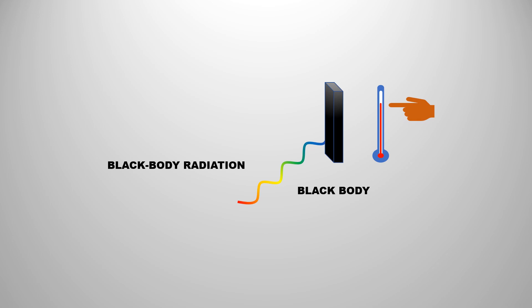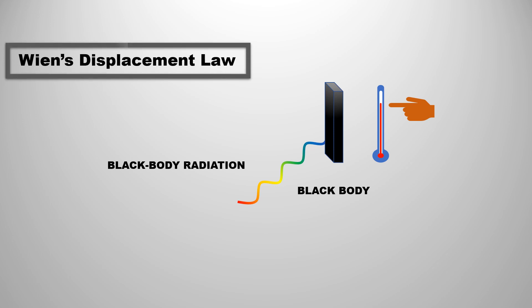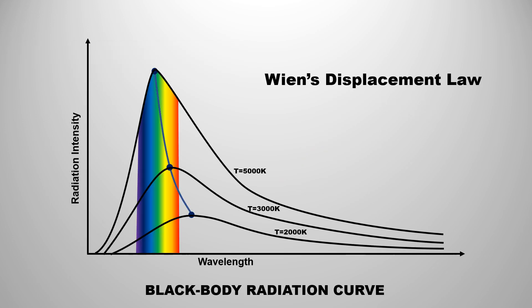But at which temperature will a body radiate radiation of which wavelength? It was first explained by William Wien with the help of classical mechanics. In this video, we will learn about Wien's displacement law as well as understand how this law has failed to explain the blackbody radiation curve.